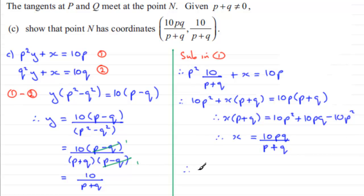So just in summary, I'm just going to say therefore N has coordinates, and just copy it out again, 10PQ over P plus Q and then 10 over P plus Q. And there's my solution.